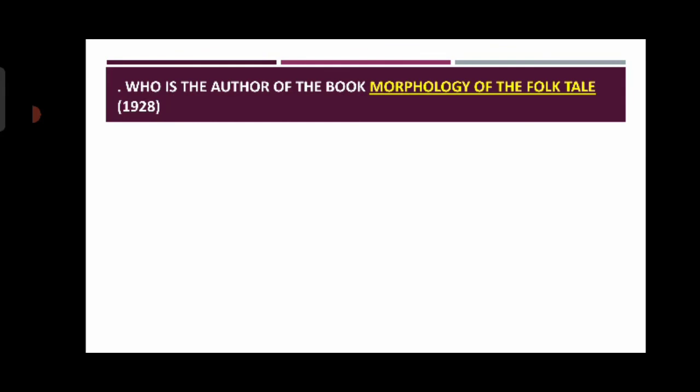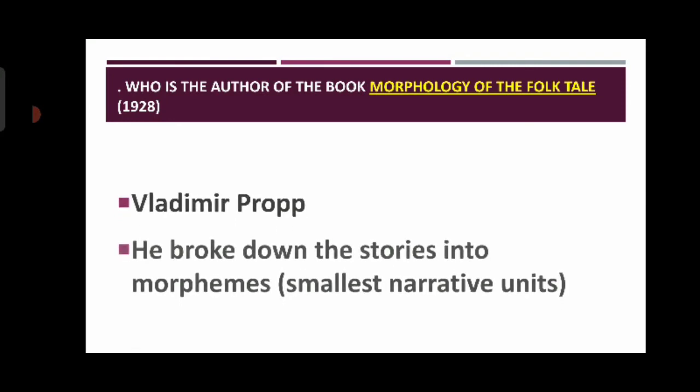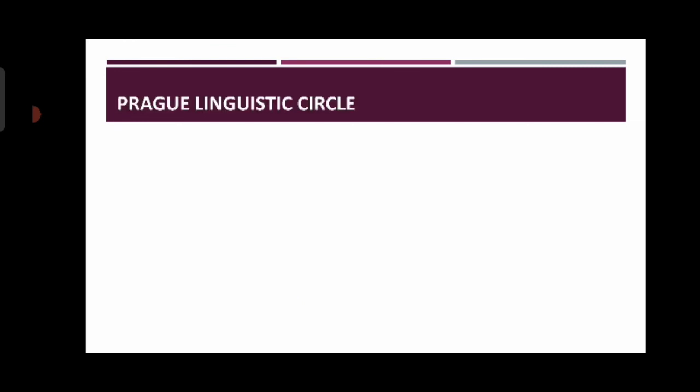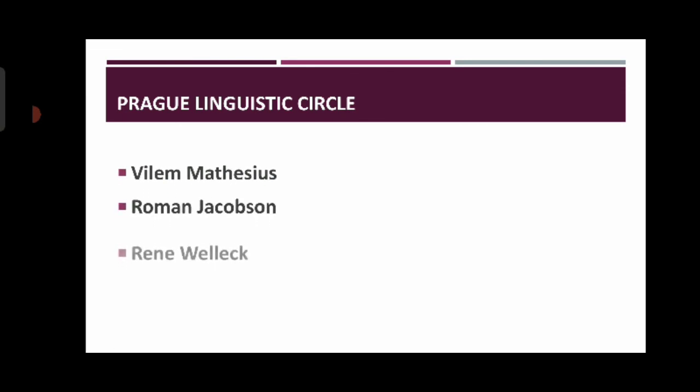The next question: who is the author of the book Morphology of the Folk Tale? The author is Vladimir Propp, and he broke down stories into morphemes, meaning the smallest narrative units. Regarding the Prague Linguistic Circle: when the formalist school of thought was suppressed in Russia, Jakobson moved to Prague and joined the Prague Linguistic Circle. Its prominent figures are Vilém Mathesius, Roman Jakobson, René Wellek, and Jan Mukařovský. Thanks for listening.